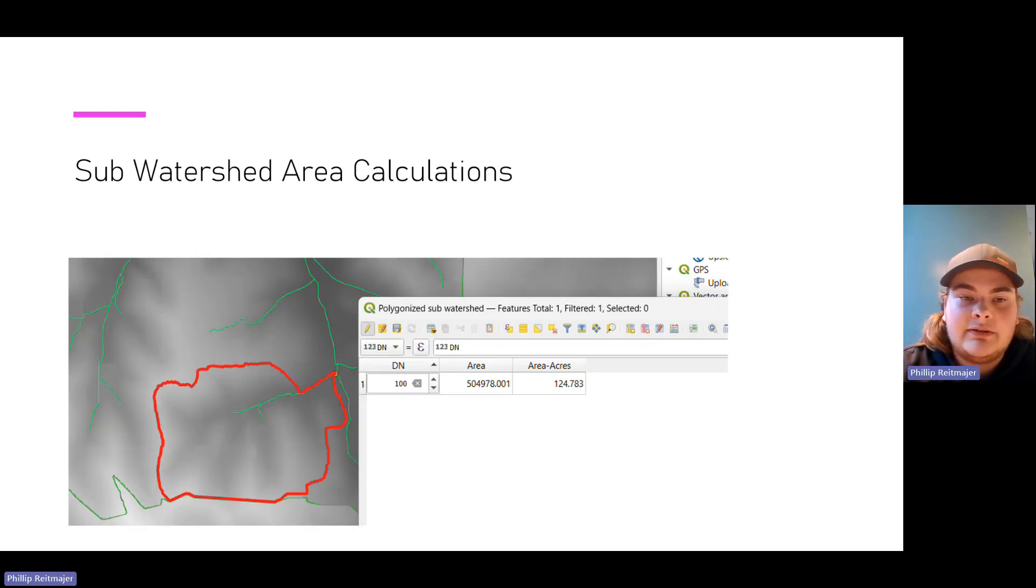To calculate the area of the sub-watershed, I used the attribute table expression for area, but that gave it in square meters. So then I did another expression which did the square meter area calculations, but then I multiplied it by the conversion to acres. As you can see, it's about 500,000 square meters and 125 acres.